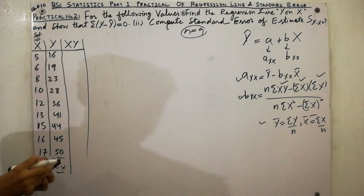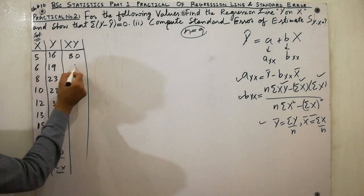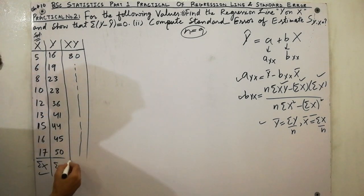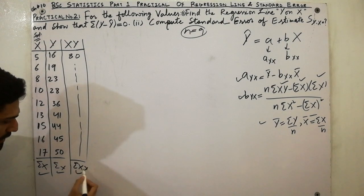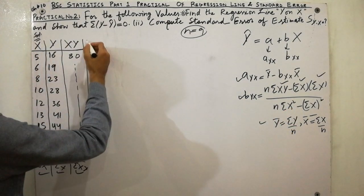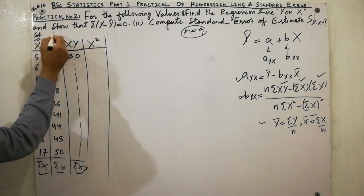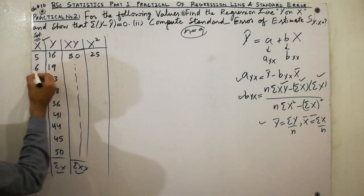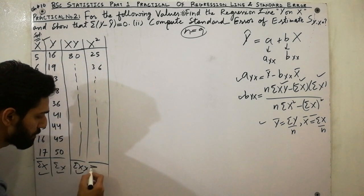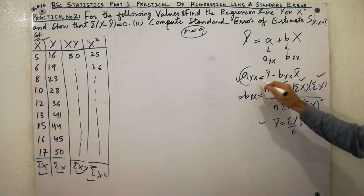For example, 5 multiplied by 16 gives 80, and 6 multiplied by 19 gives the next value, and so on. Add all xy values to get Σxy. Then calculate x² for each x value — for example, 5² = 25, 6² = 36, and so on. Add all x² values to get Σx².